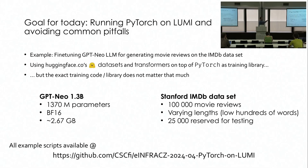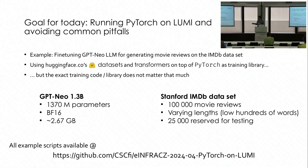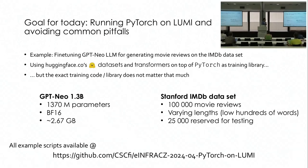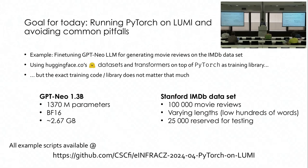We will fine-tune that language model on IMDB movie review data to get a model that generates movie reviews — not that there's much point, but it's a toy exercise. I'll be using the model, dataset, and software libraries from huggingface.co, which is a popular repository for models that builds on top of PyTorch with convenience wrappers. The model has 1.37 billion parameters, taking up about 2.7 gigabytes in 16-bit float representation. The dataset has about 100,000 reviews, with 75,000 for training.